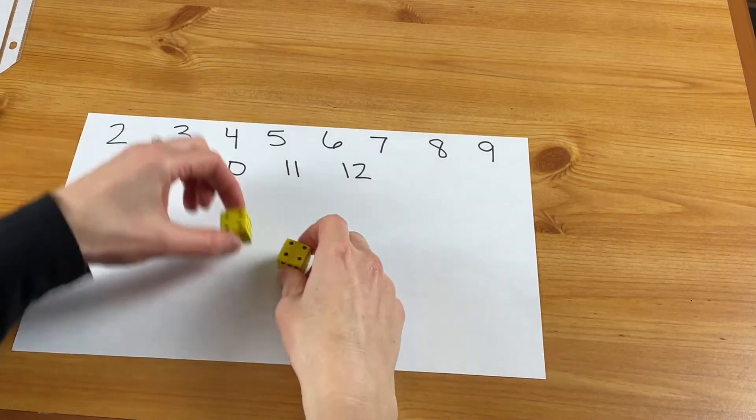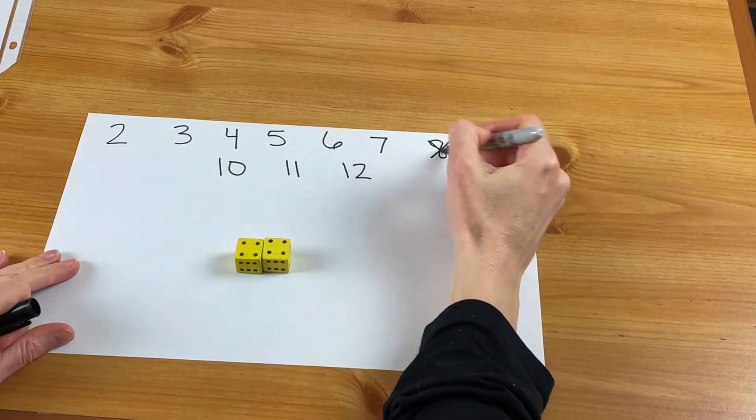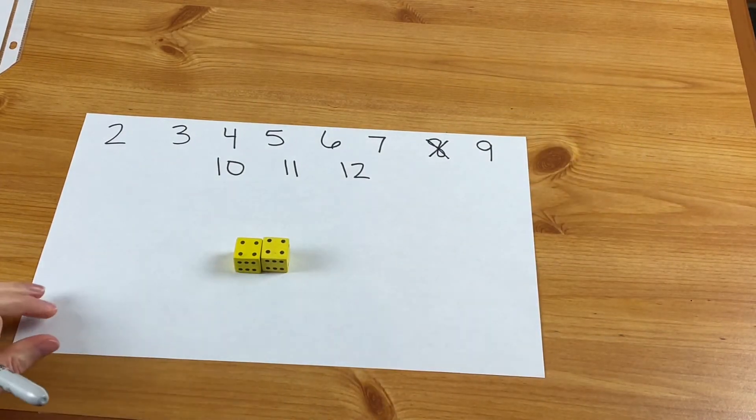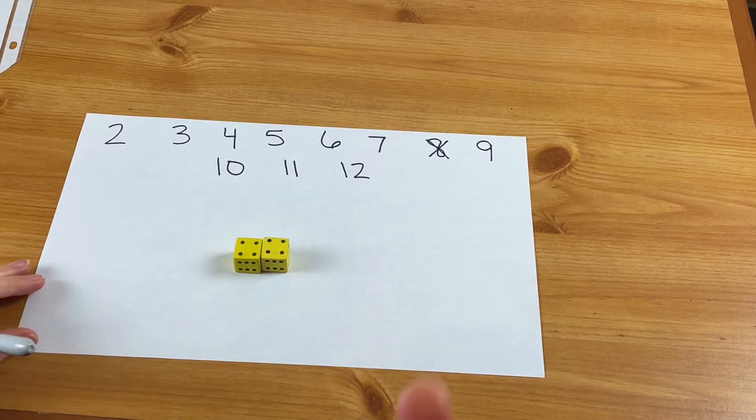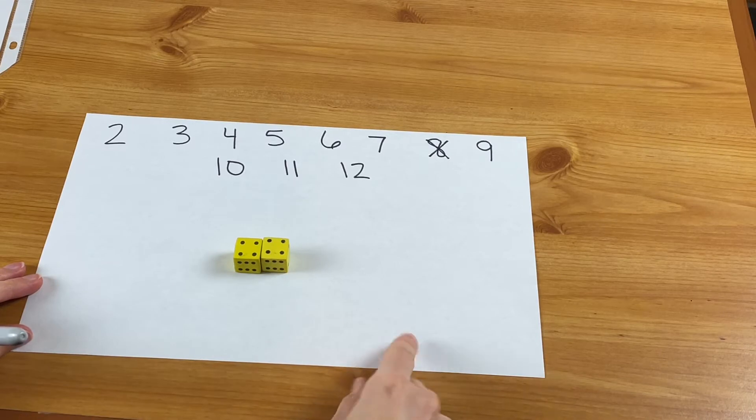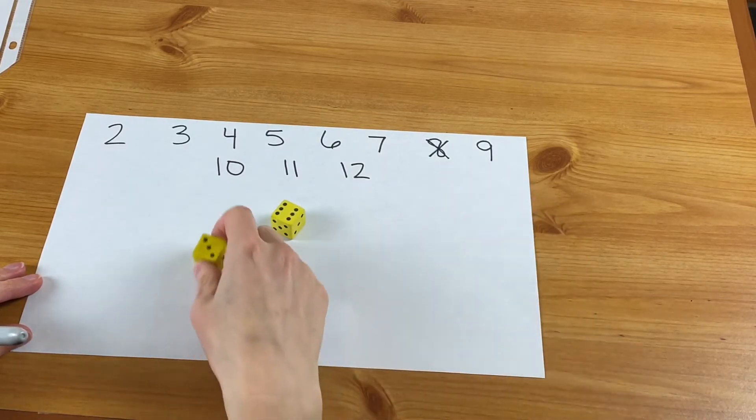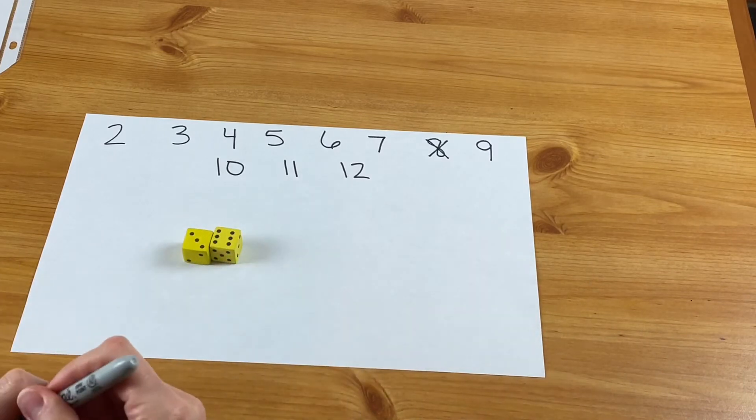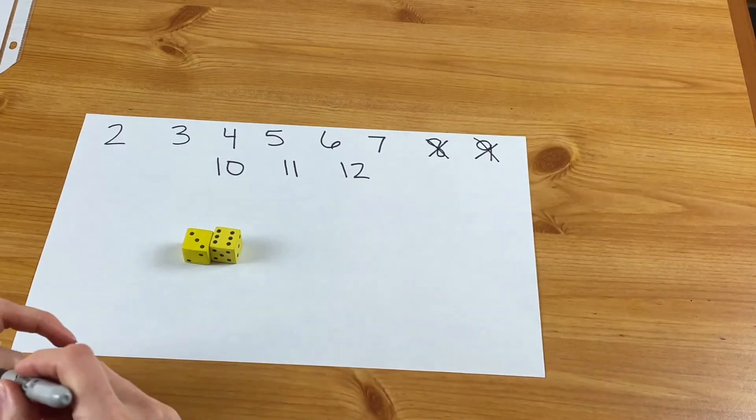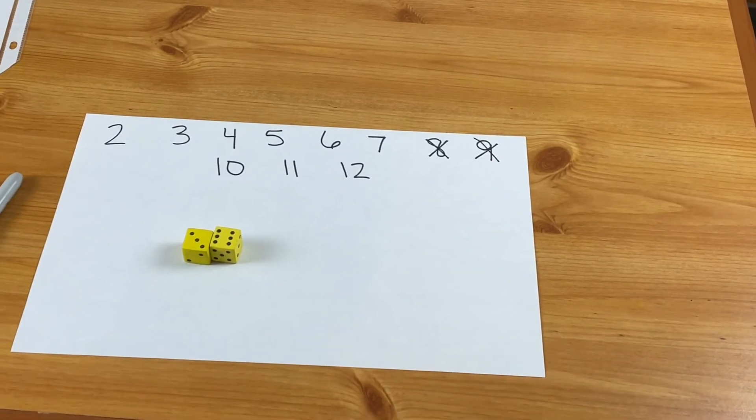You'll roll and find the sum - four and four is eight - and you cross that number out. If you're playing with partners, you would switch and your partner would go. If it's back to your turn, it's three and six so we'll cross out nine. You will continue going until you knock out all your numbers.